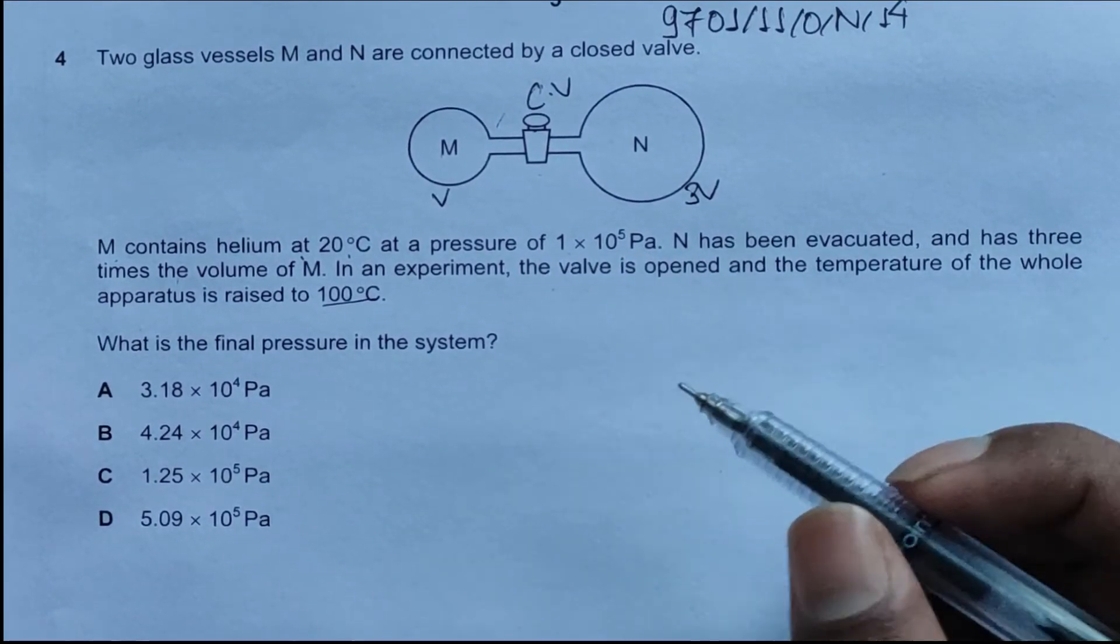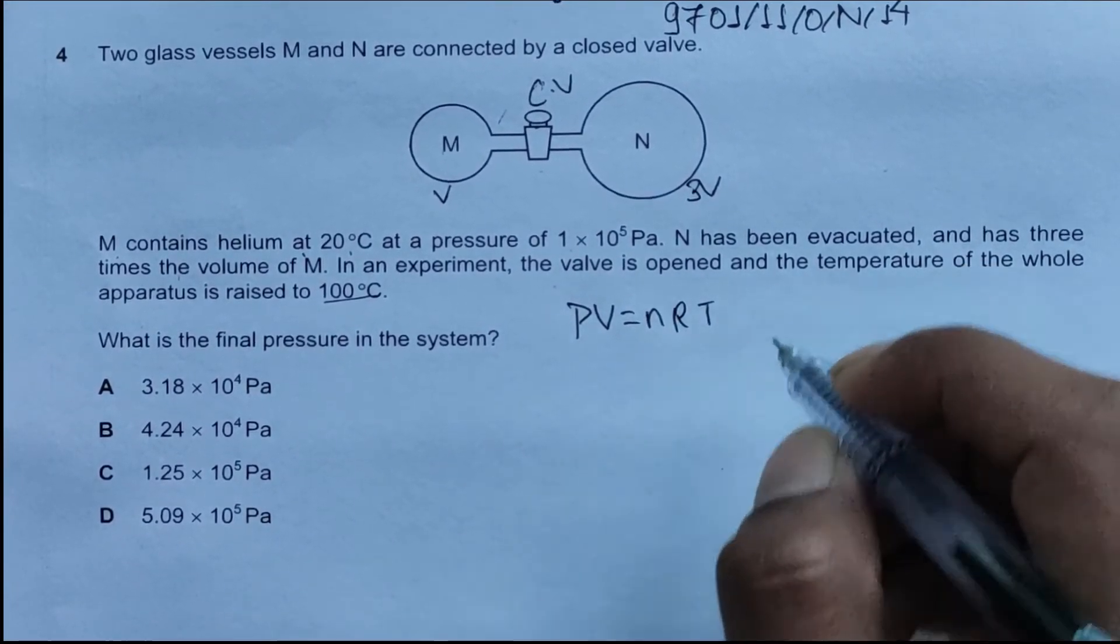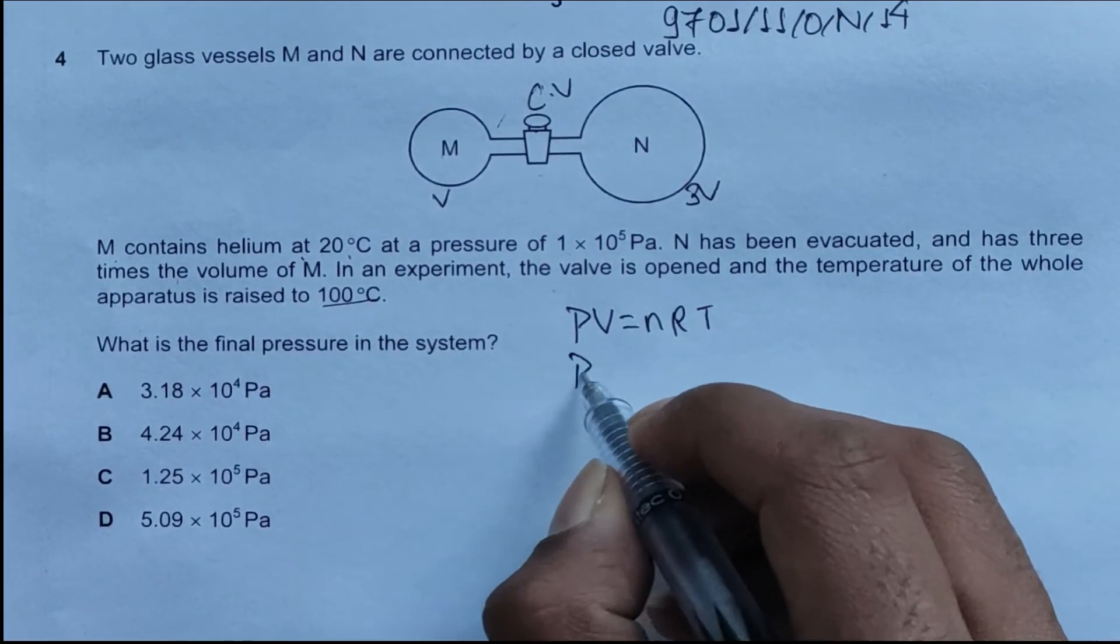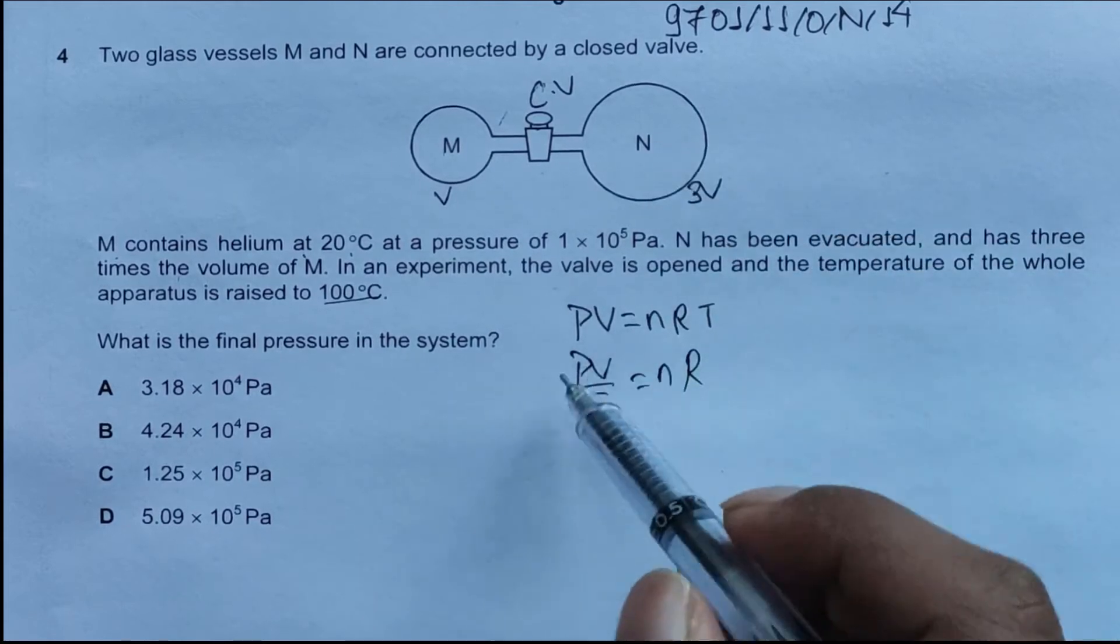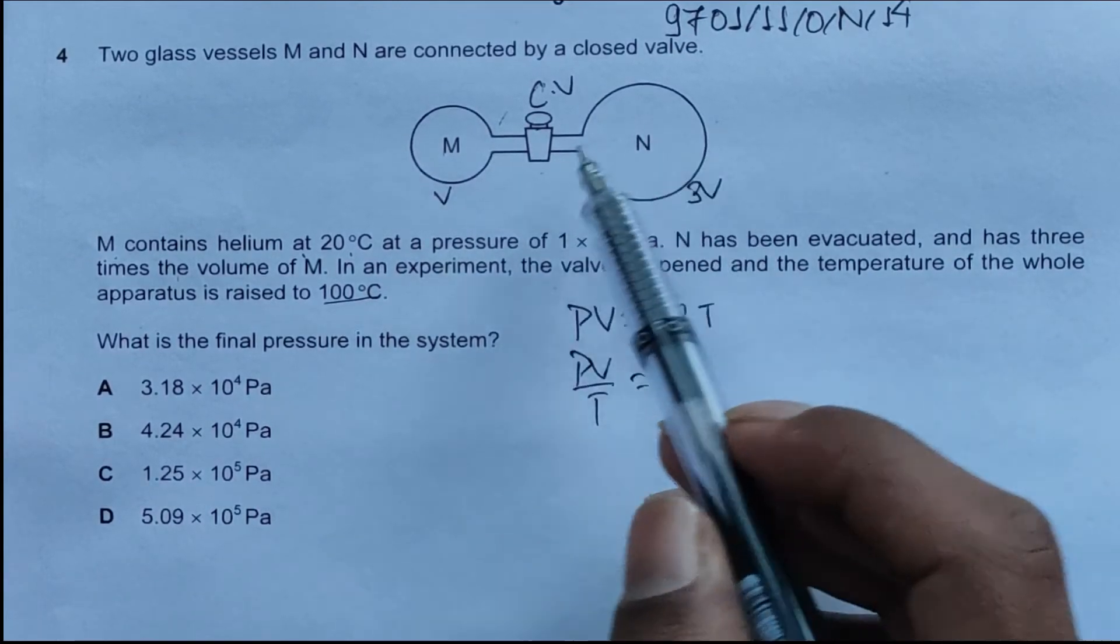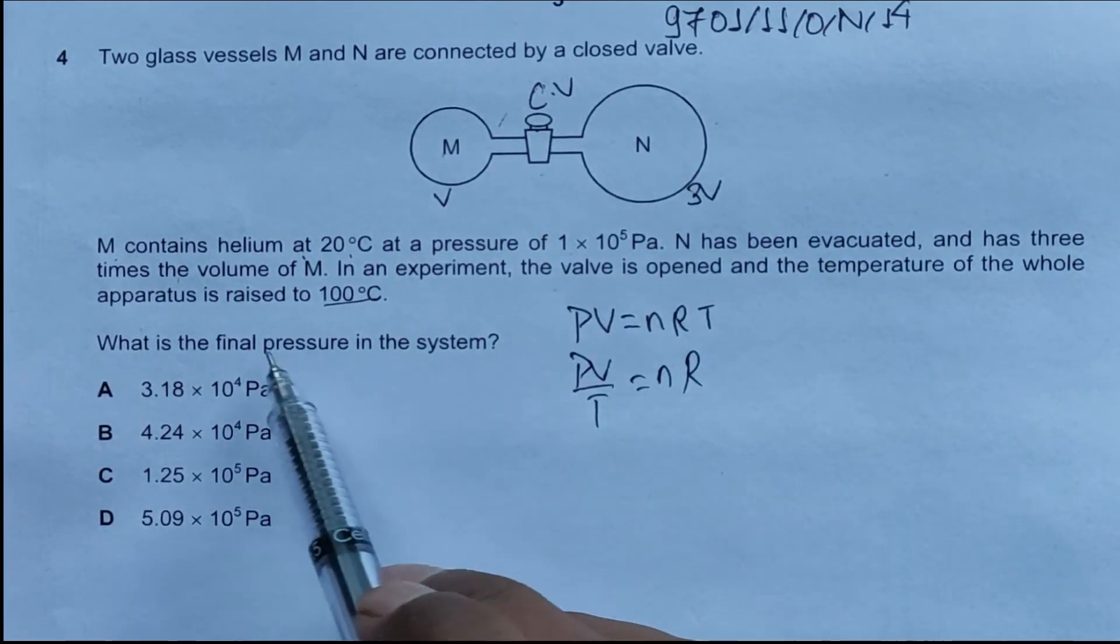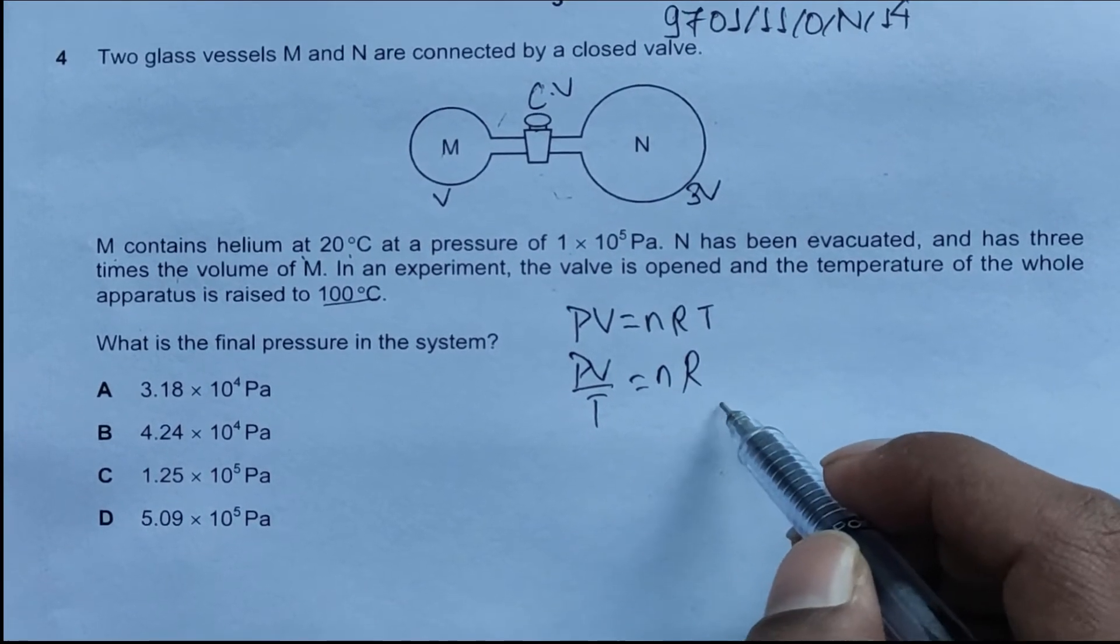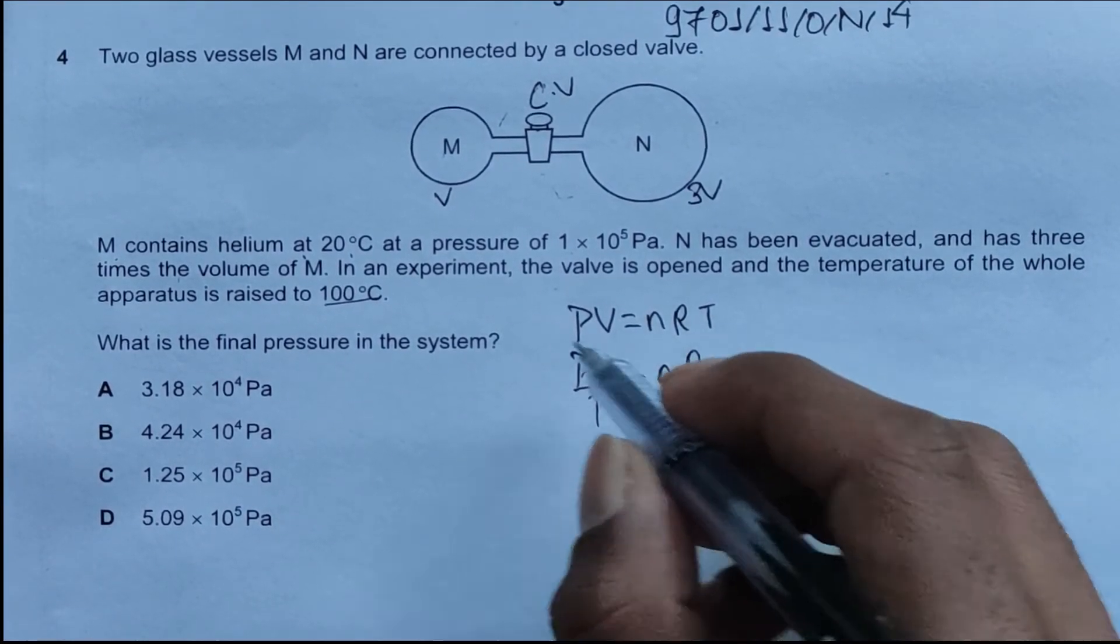For an ideal gas, we know the equation is PV equals nRT, where the symbols have their usual meaning. If we divide both sides, we'll have PV/T equals nR. In this case, we have the same moles of helium dispersed in both gas vessels after the seal is open, so n is the same across both cases. R is the molar gas constant, so it is the same across all gases.